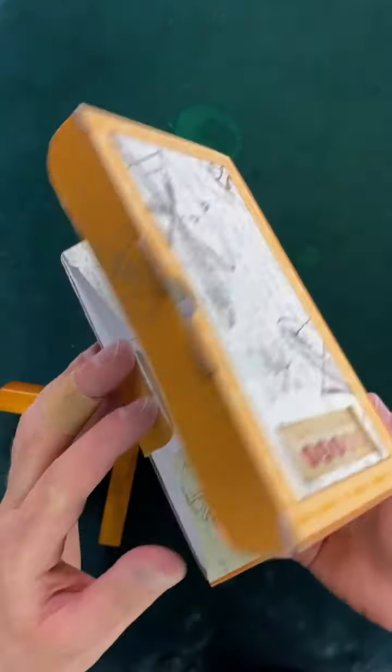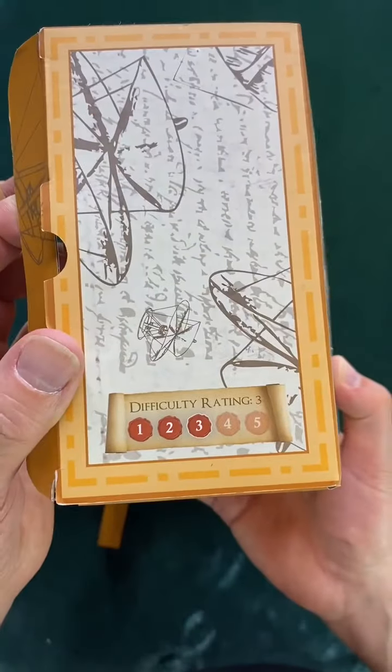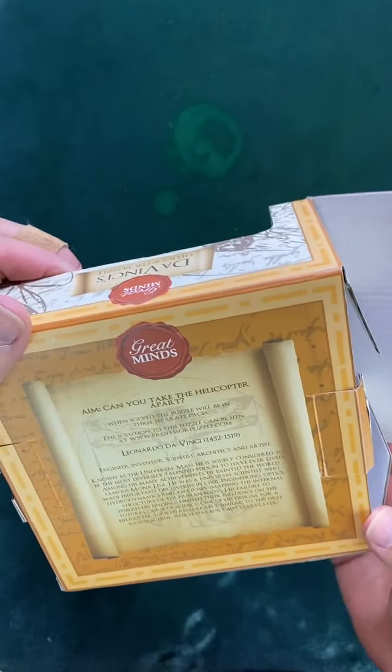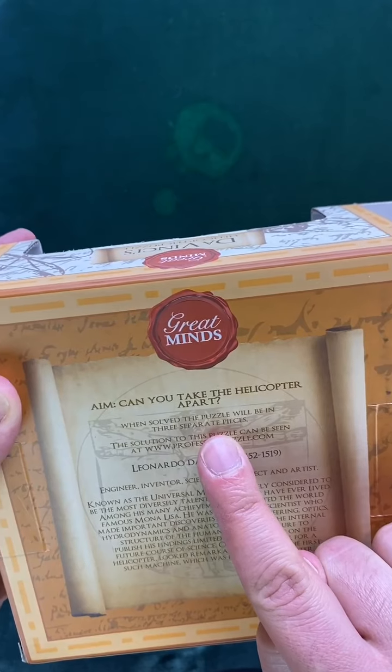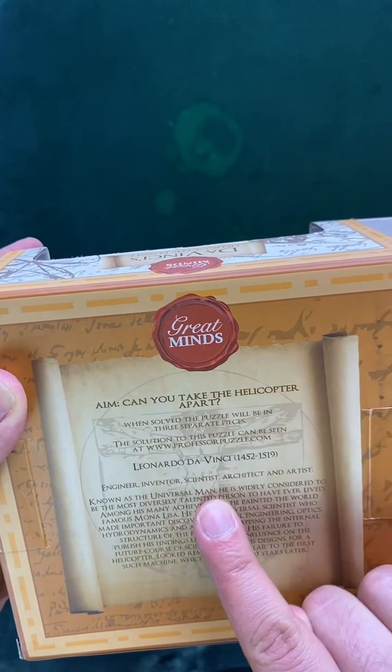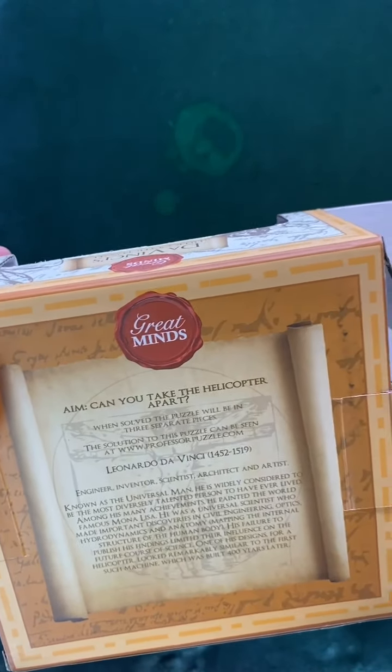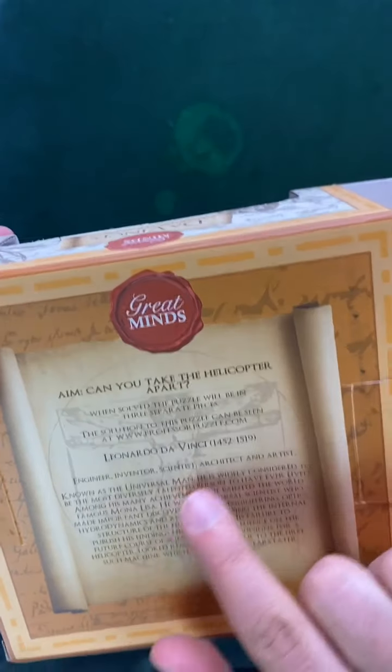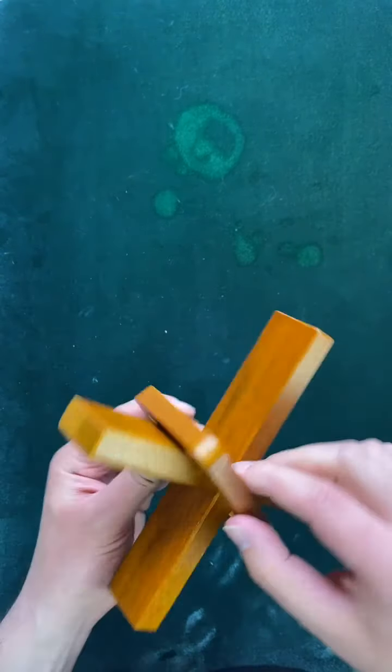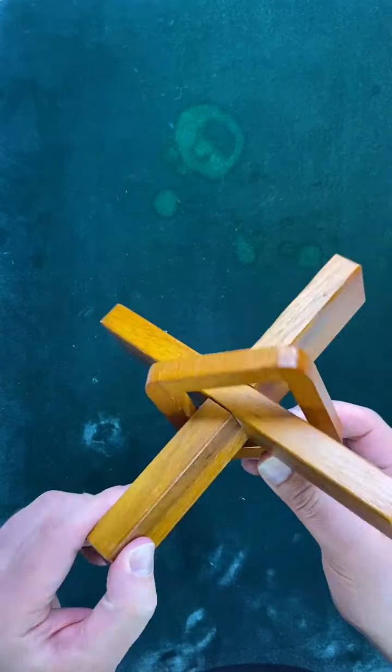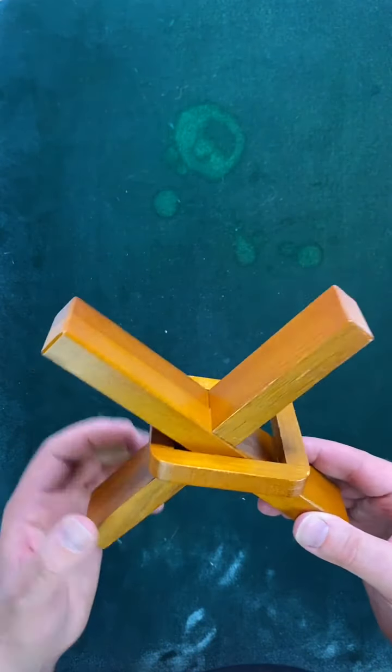Now, these puzzle boxes here, let's see. This tells us it's a difficulty rating of three out of five. Can you take the helicopter apart? When solved, the puzzle will be in three separate pieces. The solution can be, well, we're not going to look at the solution, but we see it is either inspired by da Vinci or from da Vinci. And it's called a helicopter puzzle.